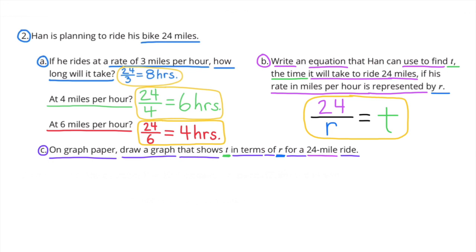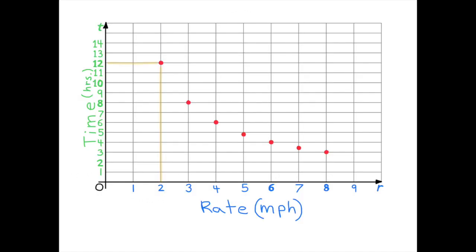C. On graph paper, draw a graph that shows T in terms of R for a 24-mile ride. Across the horizontal axis on the bottom, I've put the rate in miles per hour. 1, 2, 3, 4, 5, 6, 7, 8, 9, and that represents the R axis. On the left side, the vertical axis, I have the time in hours represented, 1 through 14, and that's the T axis.